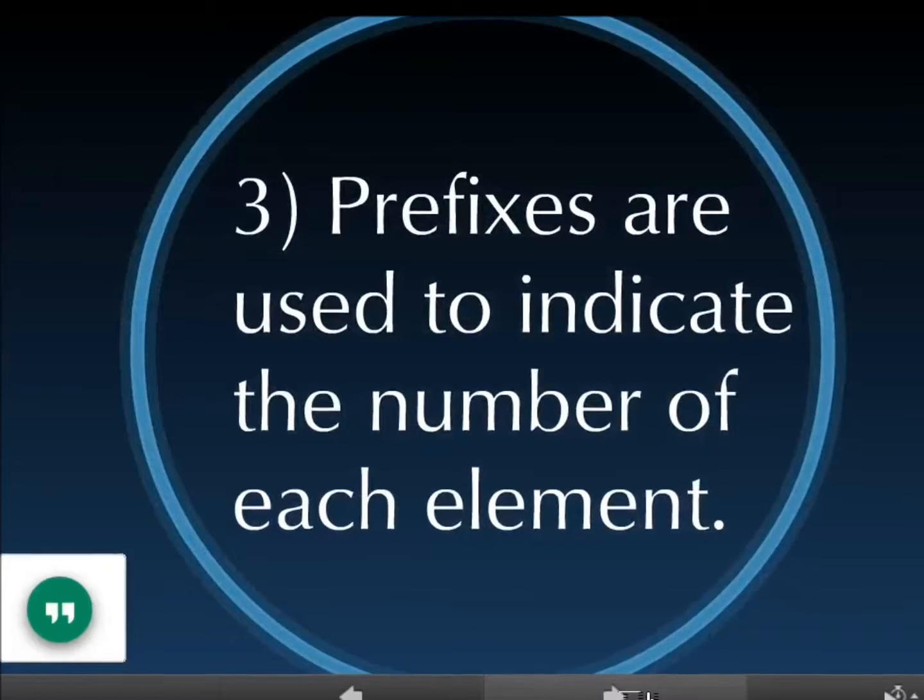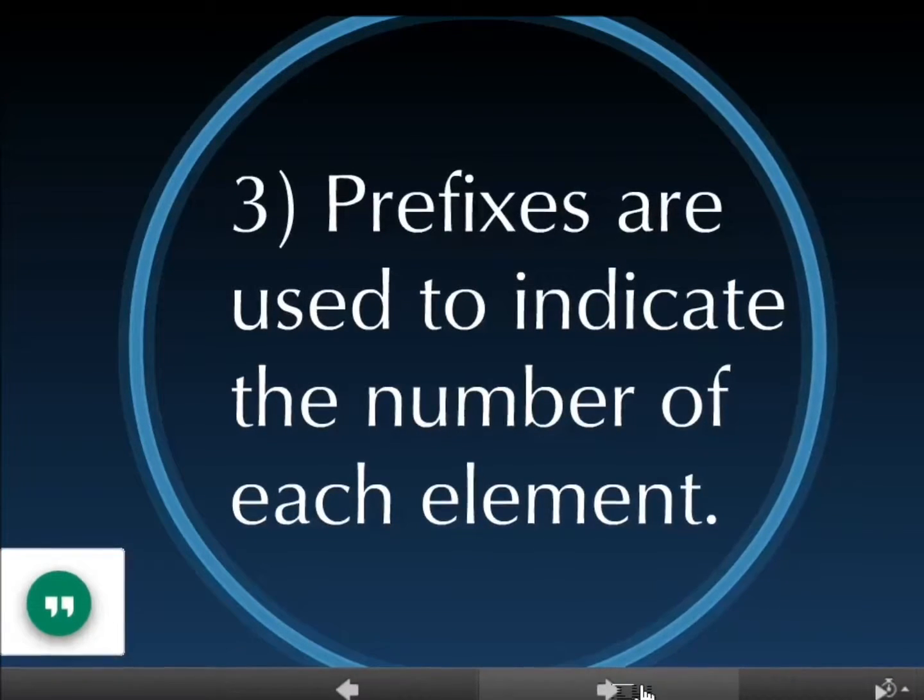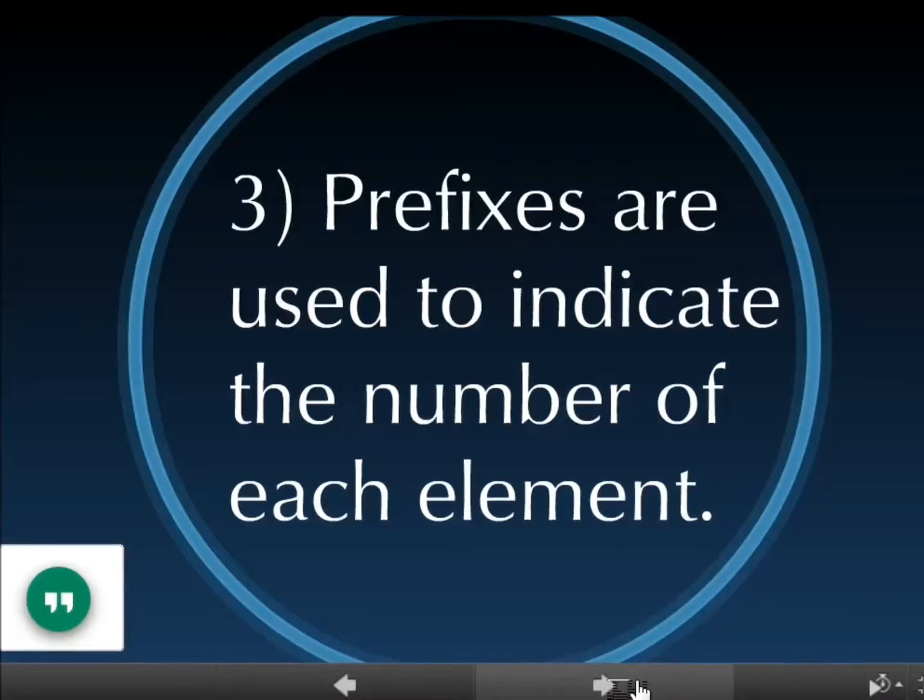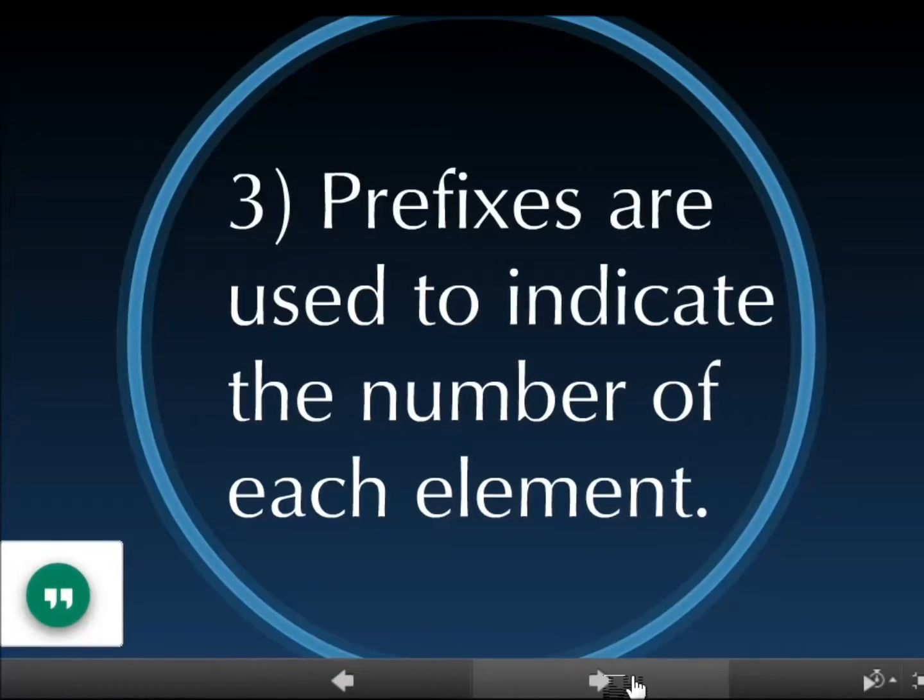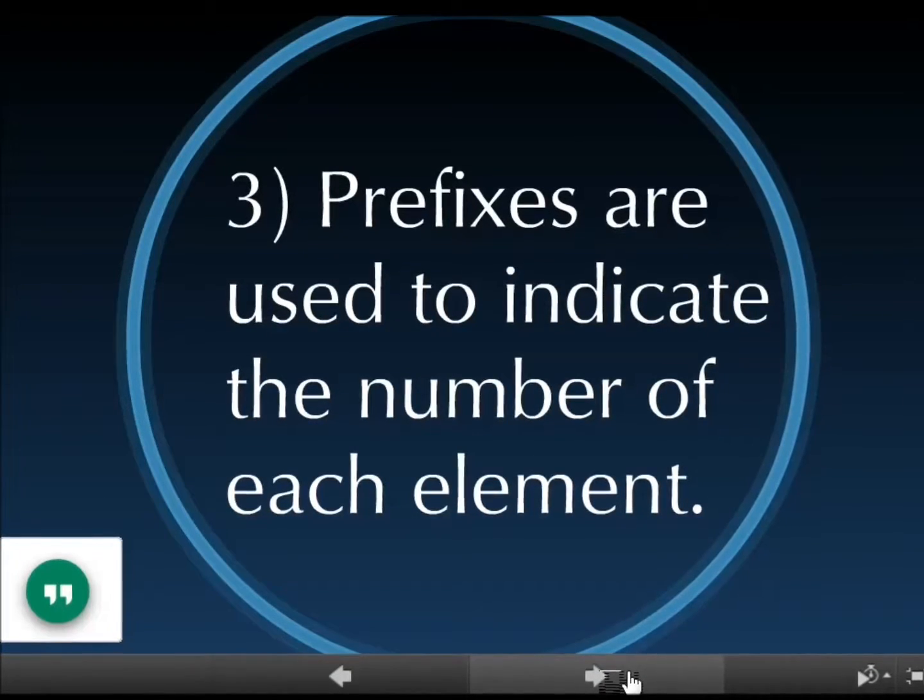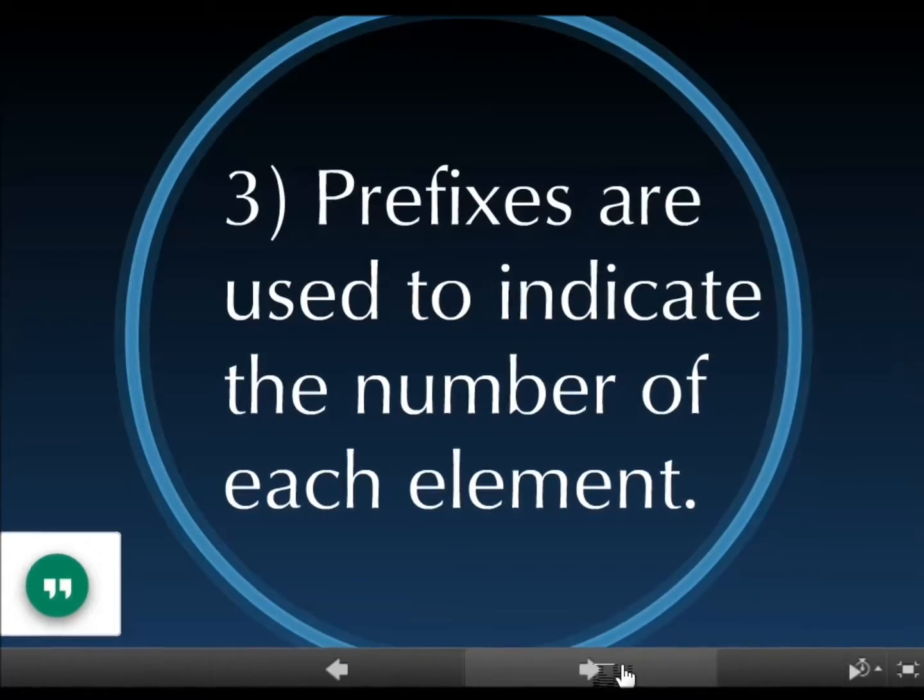Here's the difference: we're going to be adding prefixes to tell us how many of each element there are. And the reason why we're doing this is because in covalent compounds they can combine in different ratios, unlike ionic compounds which always combine in the same ratio.